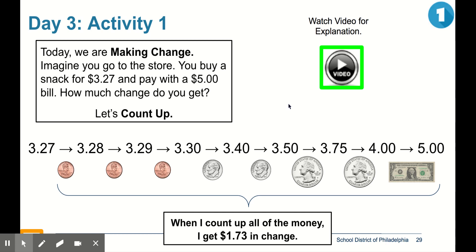Day 3, Activity 1. Let's read what it says in the box. Today, we are making change. Imagine you go to the store. You buy a snack for $3.27 and pay with a $5 bill. How much change do you get? Let's count up.